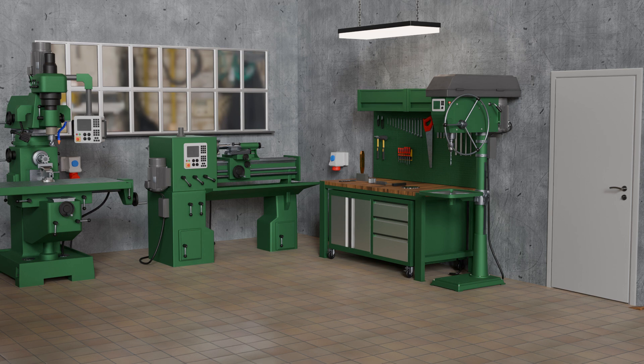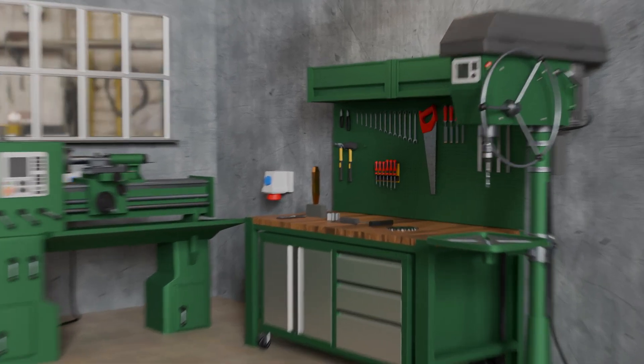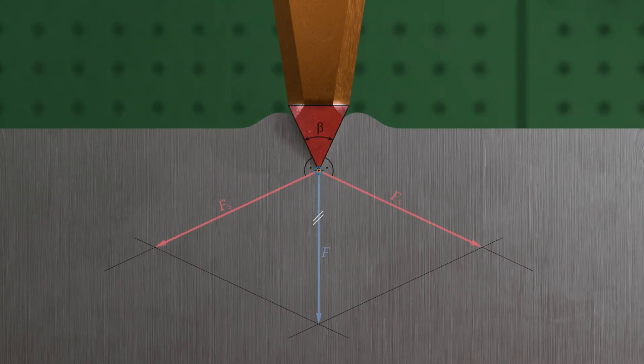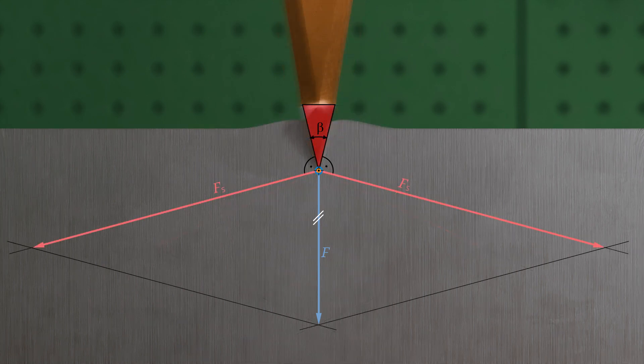The linked video explains in detail the fundamentals of cutting and the forces involved at a cutting wedge. The cutting wedge of a chisel is used as an example, where separating forces act perpendicularly to the wedge faces, ultimately causing the material to split. The smaller the wedge angle beta, the greater the separating forces, but the less stable the cutting edge becomes.